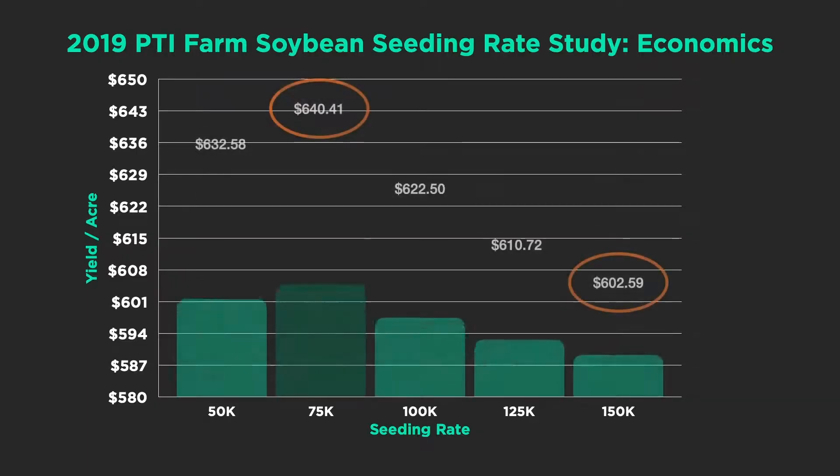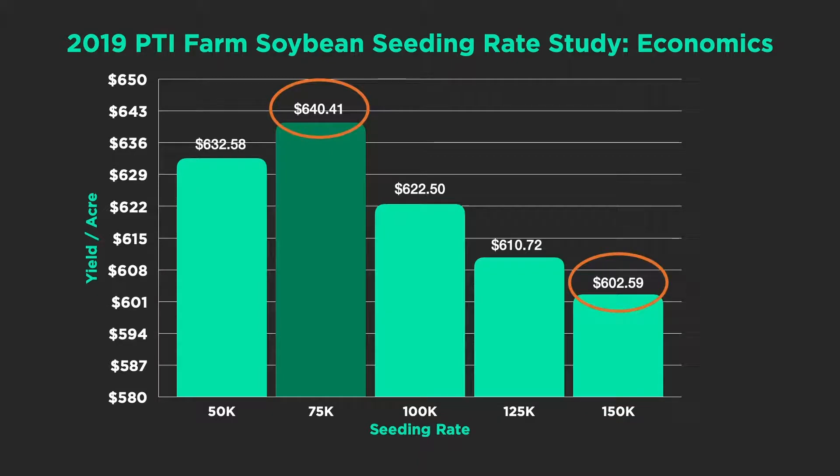A lot of folks would say if you're going to plant late, increase seeding rates — not decrease. But with this soybean, it offered us the ability at these low seeding rates to branch and give us more overall nodes, pods, and ultimately beans. Looking at the economics, comparing 150,000 to the 75,000 seeding rate that won, there was almost a $38 difference in revenue from overseeding — we were planting too heavy and it cost nearly $38 per acre.